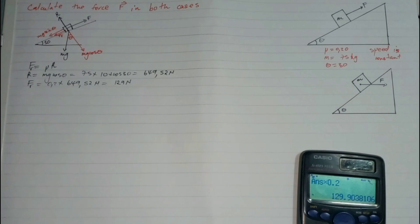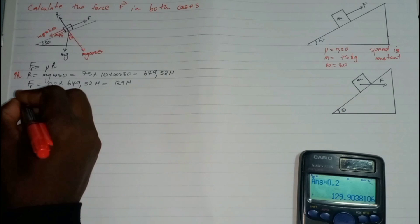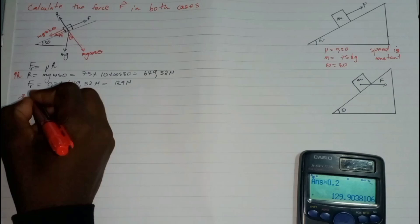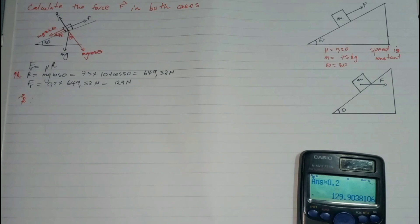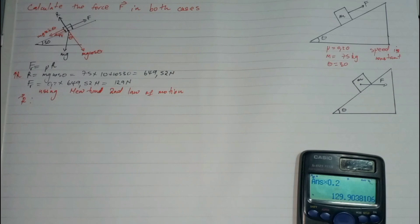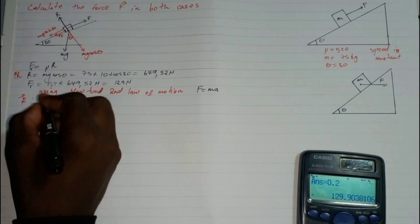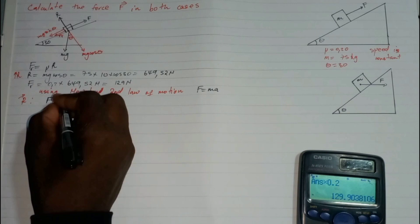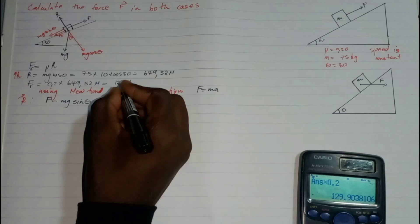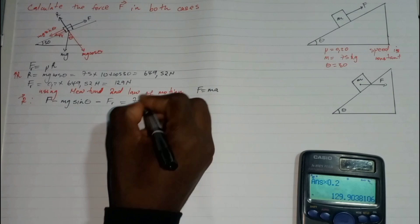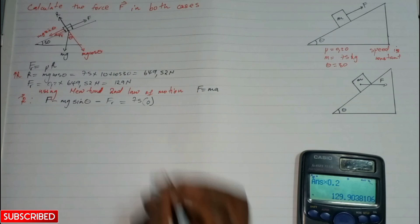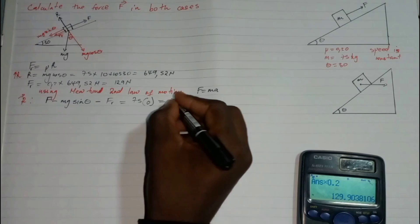Now I'll resolve parallel to the plane using Newton's second law of motion. Force equals mass times acceleration. I have many forces, so the resultant force parallel to the plane gives: F minus mg sinθ minus the frictional force equals 75 times acceleration. Since speed is constant, acceleration equals zero, so this is equal to zero.